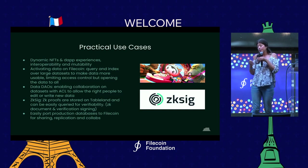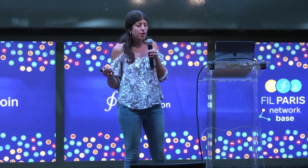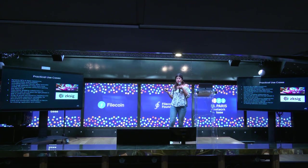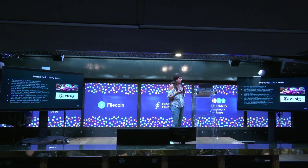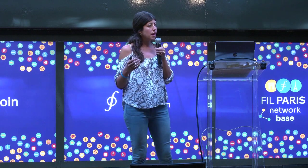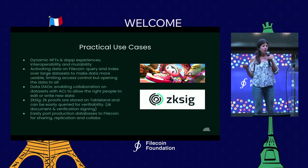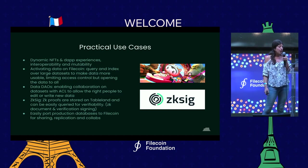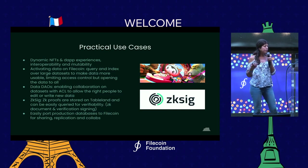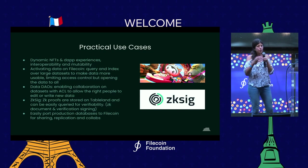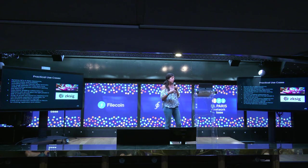There's not a ton of interoperability adoption at this point because the users just aren't there yet. But as adoption increases and we want to connect communities, we'll see that a lot more. Activating data on Filecoin is another great use case - a way to query, index, and search large datasets. Data DAOs are another use case: assigning access control to who can change data within a Data DAO, keeping it open so anyone can query it but only allowing people with certain permissions via wallet addresses or NFTs to write to that database. ZKSIG is a project building with us - they're storing ZK proofs on Tableland so you can query for verifiably signed documents.